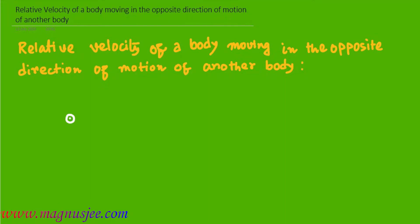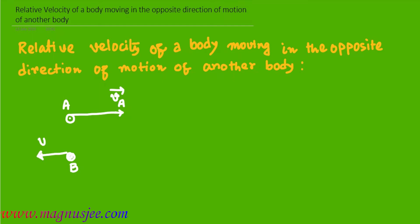Relative velocity of a body moving in the opposite direction of motion of another body. In the diagram, body A is moving with velocity vector vA towards right. Another body B is moving in the opposite direction with velocity vector vB.